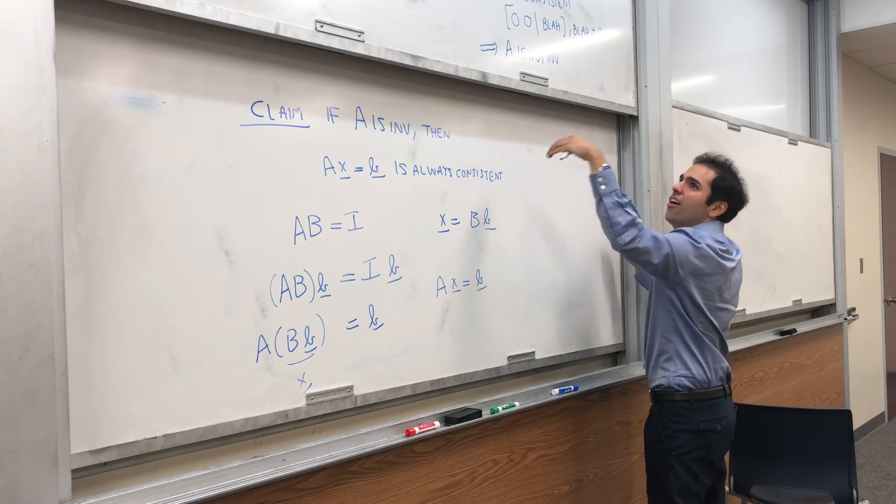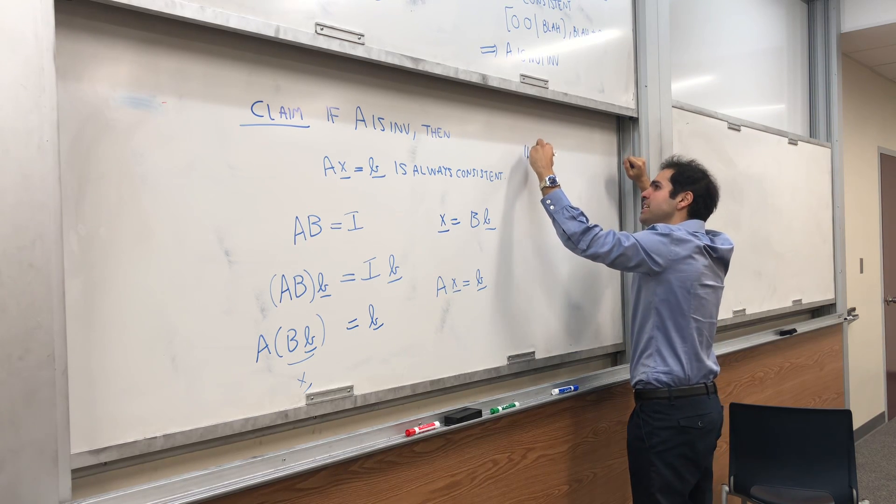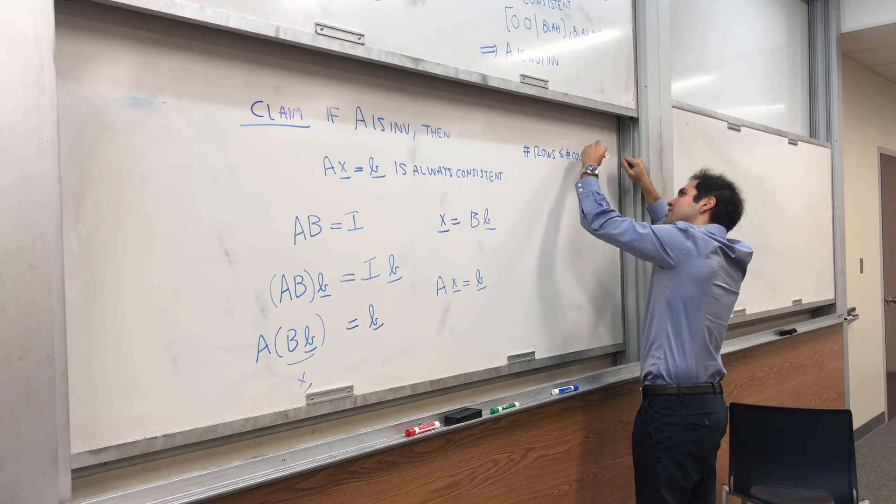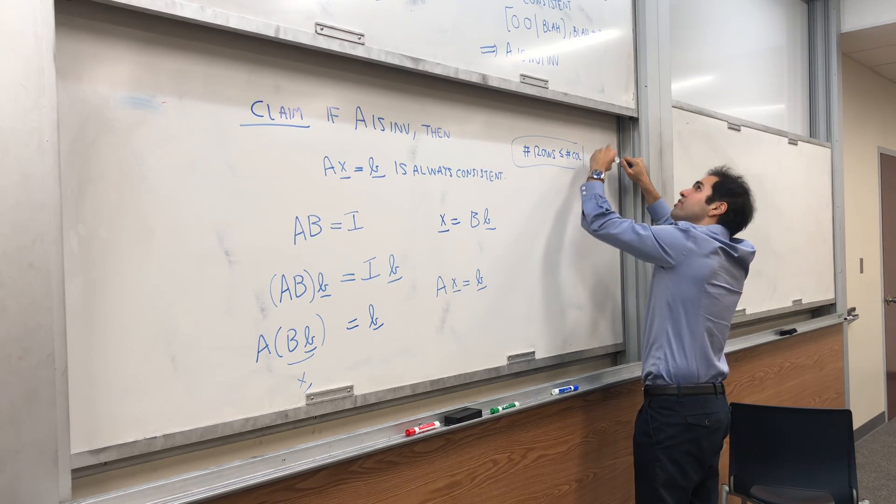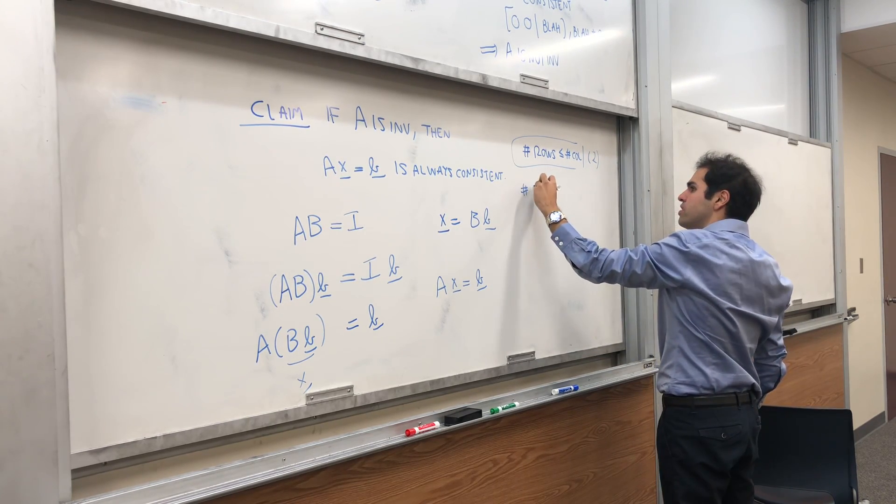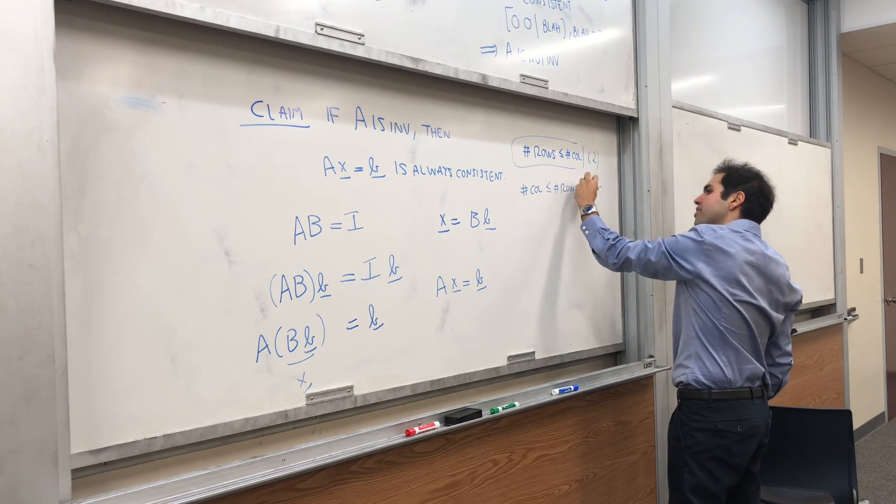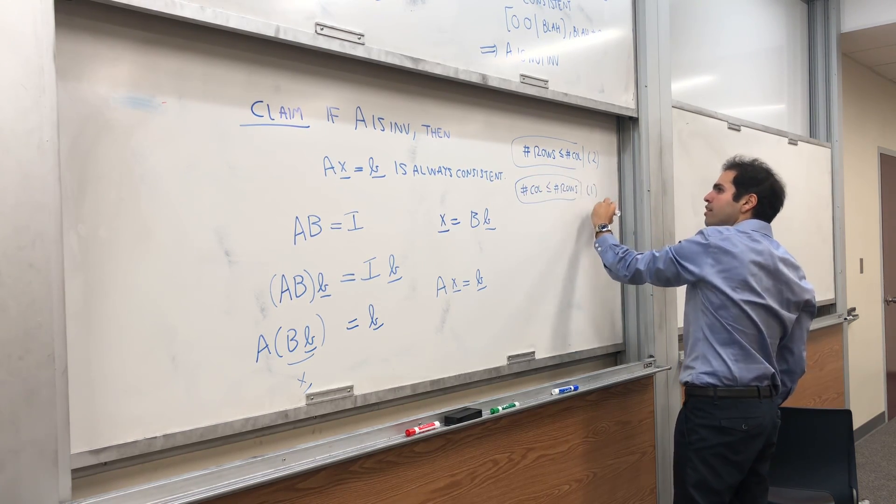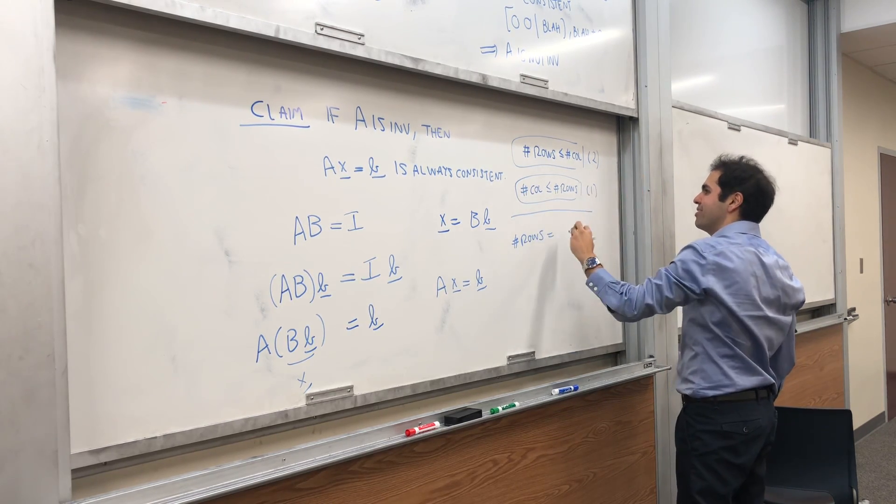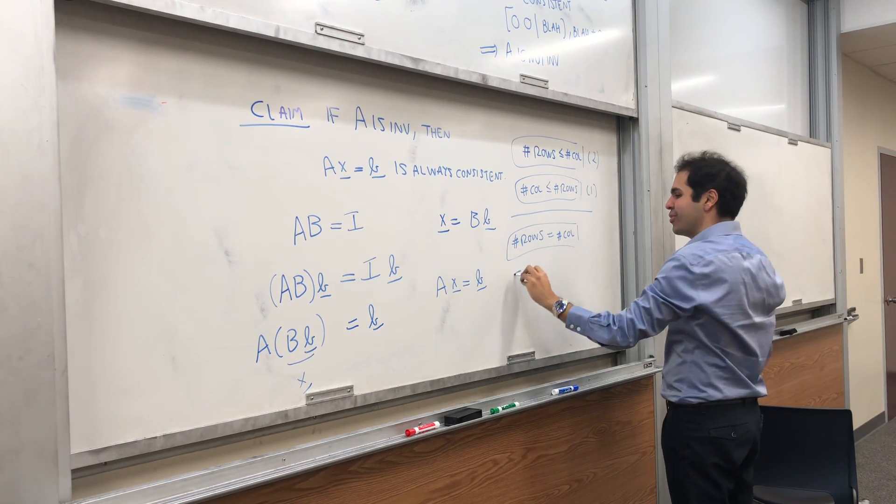And therefore, what made this not work is that we had more rows than columns, so need number of rows to be less than or equal to the number of columns. So that was two. And I think I erased the other one, but the first condition was the number of columns was less than or equal to the number of rows. Well, if you combine that, you get that the number of rows has to be equal to the number of columns. And this is by definition a square matrix.